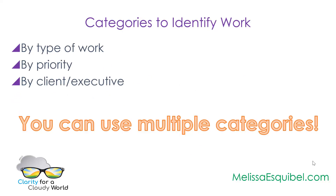Let's begin with categories to identify work. You can do this in multiple ways — certainly by type of work, or also by priority. Priority one, two, and three is okay, but I like priorities that indicate urgency. For example, 'Do Next' or 'Do Right Now' means as soon as I'm done processing email, that's the next thing I'm doing. Or 'By Close of Business' means this has to be done today. Categories that identify urgency in real words work better for me.